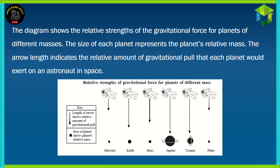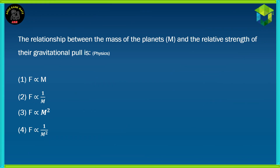First question. The diagram shows the relative strengths of the gravitational force for planets of different masses. The size of each planet represents the planet's relative mass. The arrow length indicates the relative amount of gravitational pull that each planet would exert on an astronaut in space. The relationship between the mass of the planets, M, and the relative strength of their gravitational pull is?